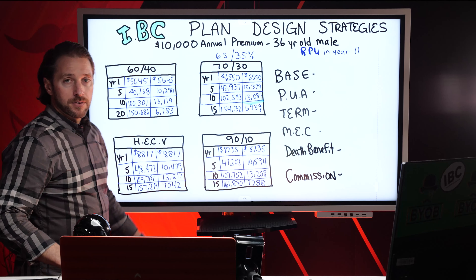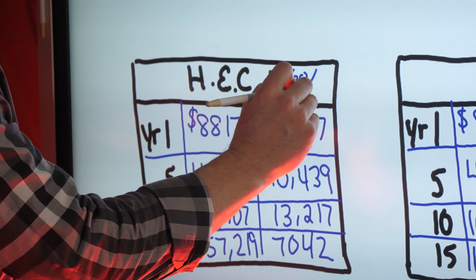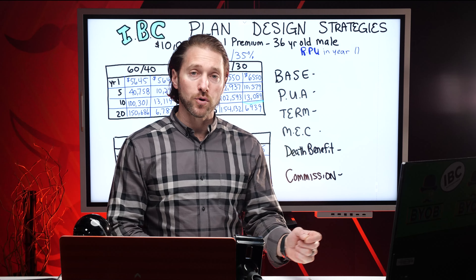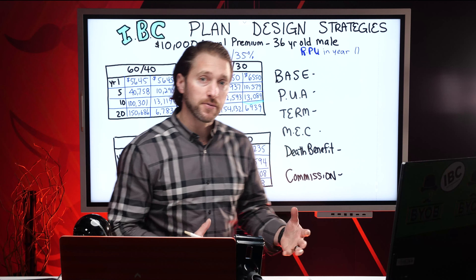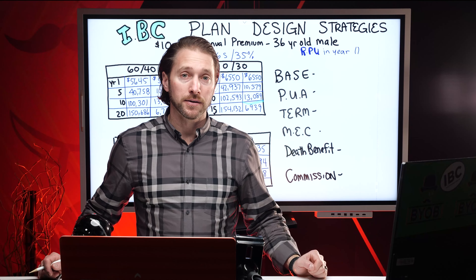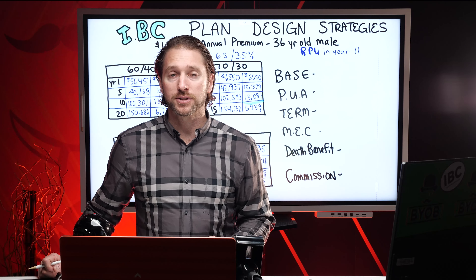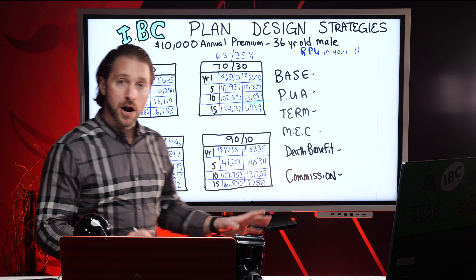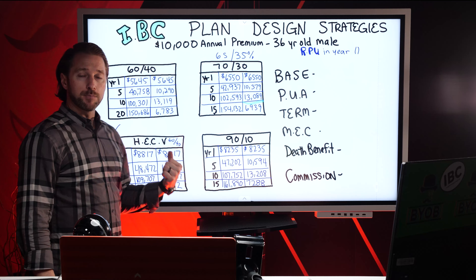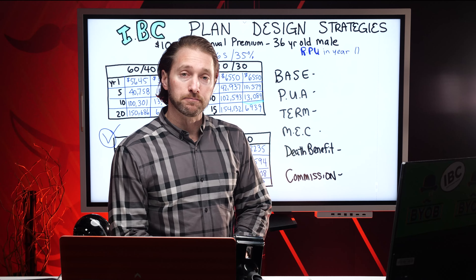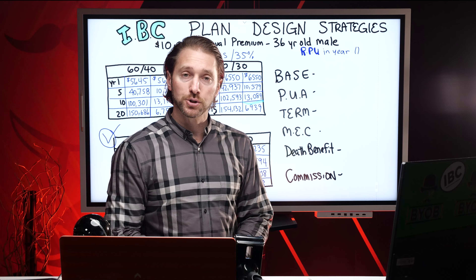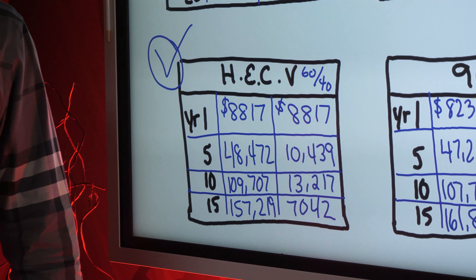The HEC-V is a 60-40 design, but it obtains such high early cash value because they cut the commission for the agent significantly — almost 90%. A lot of agents in career roles won't even talk about it because they don't want to take that commission cut. Our number one go-to plan for real estate investors and people that need high early cash value is the HEC-V. It pays us the least commission out of any of them. Someone's got to give so somebody else gets, and for people that need high early cash value, you should be the one that gets.